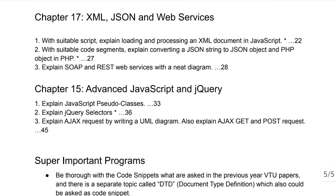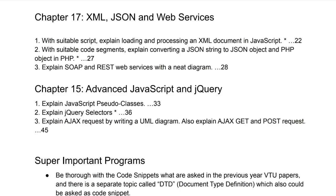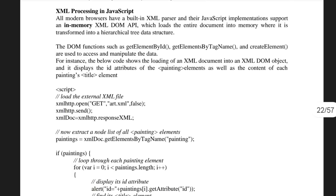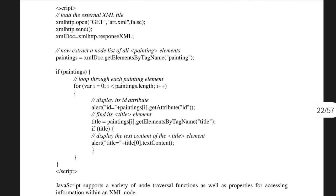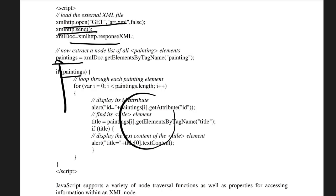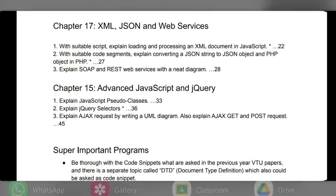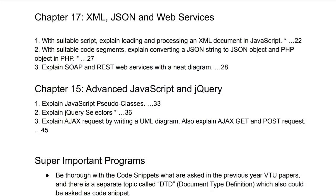Moving to the second chapter — XML, JSON and web services. The first question is: with a suitable script, explain loading and processing an XML document in JavaScript. For XML processing in JavaScript, you first open the XML document, send the HTTP request, open the document and store it in a variable called 'paintings', iterate through it, take each element and its attribute, and display accordingly. That's how JavaScript and XML work together.